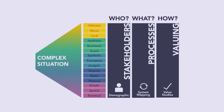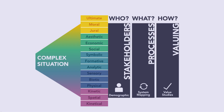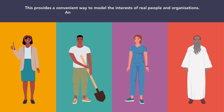First, the user identifies functional groups of stakeholders using categories based on their characteristics or concerns. This provides a convenient way to model the interests of real people and organisations, and any one of these is likely to play multiple roles.